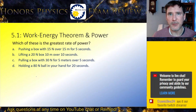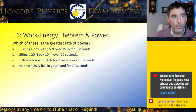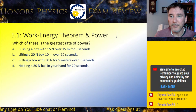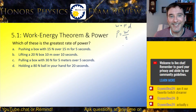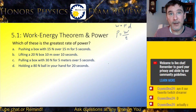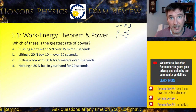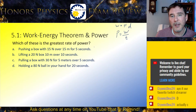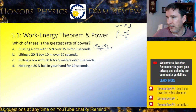Which of these is the greatest rate of power? Power equals work divided by time, and work equals force times displacement. Let's work out each one. Pushing a box with 15 newtons for 15 meters in 5 seconds: that's 15 times 15 divided by 5, which gives 45 watts. My tip is to work out each one rather than guessing on the test.